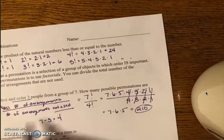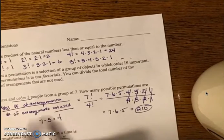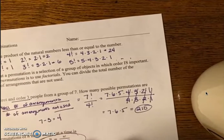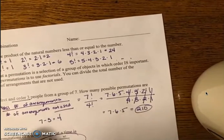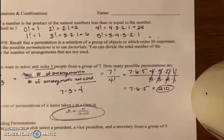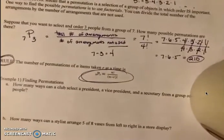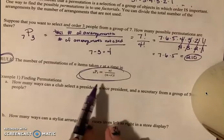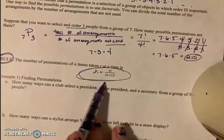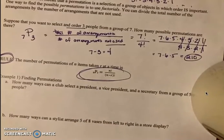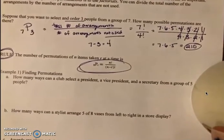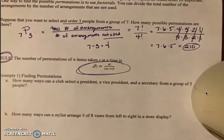So what we just did, using the total number of arrangements over the number of arrangements not used, can give us the general rule. Here's our rule for permutations. On the next test you may want to have this on a note card, and we're going to be using this in the examples and on your homework tonight, because we're now actually solving.